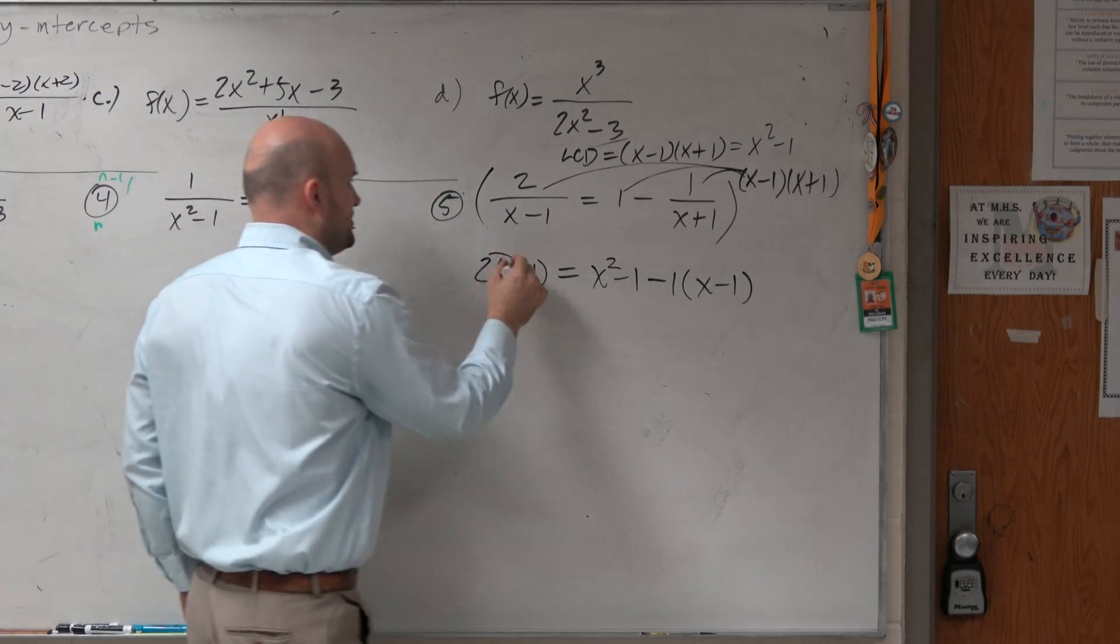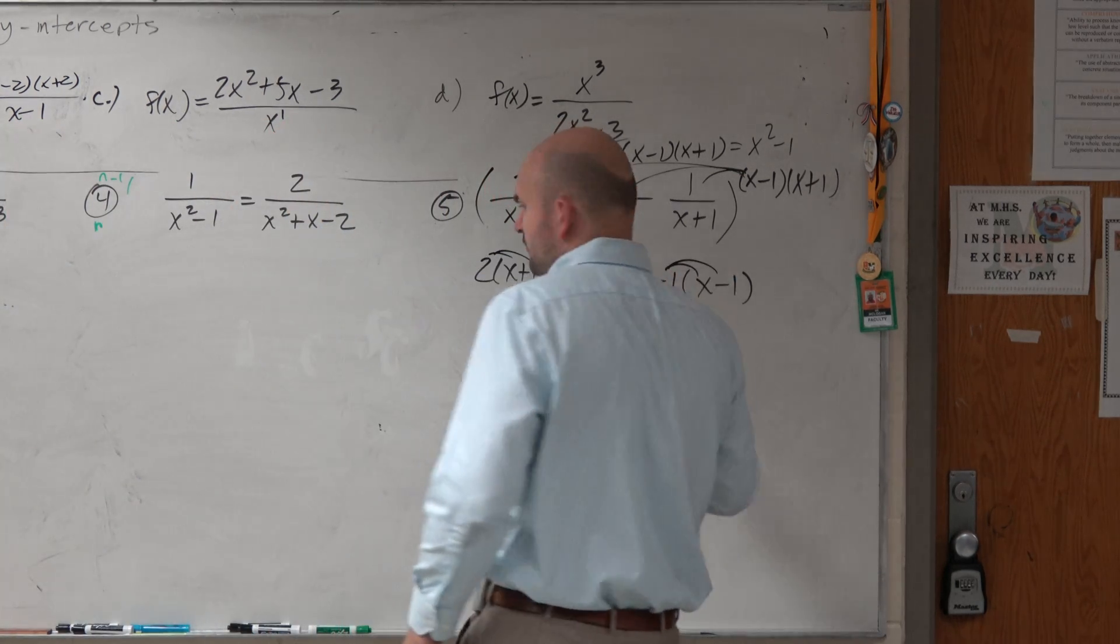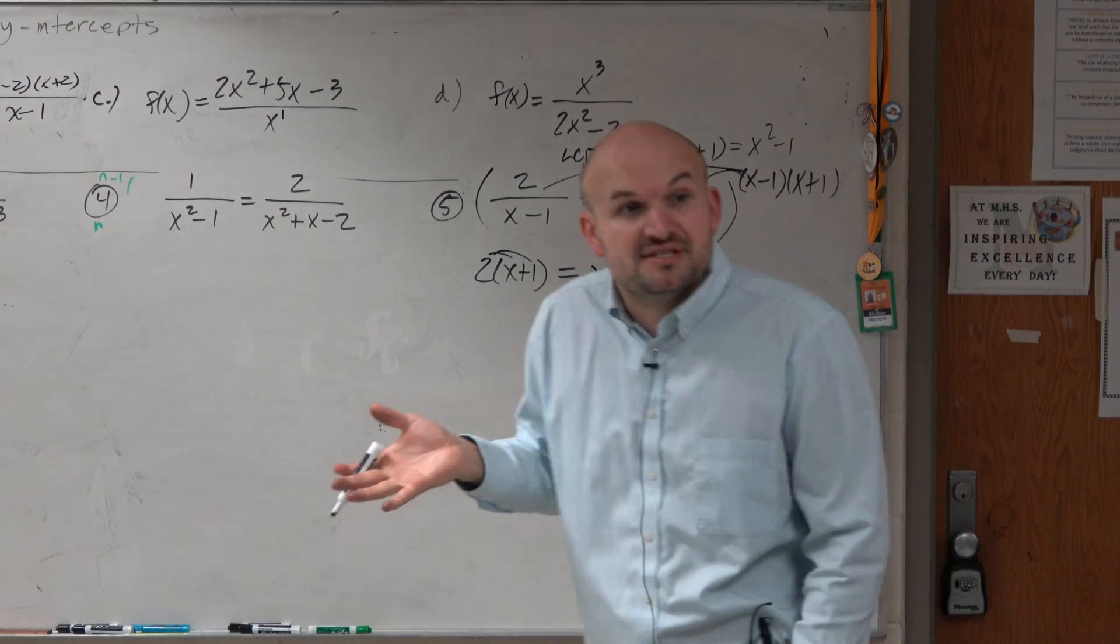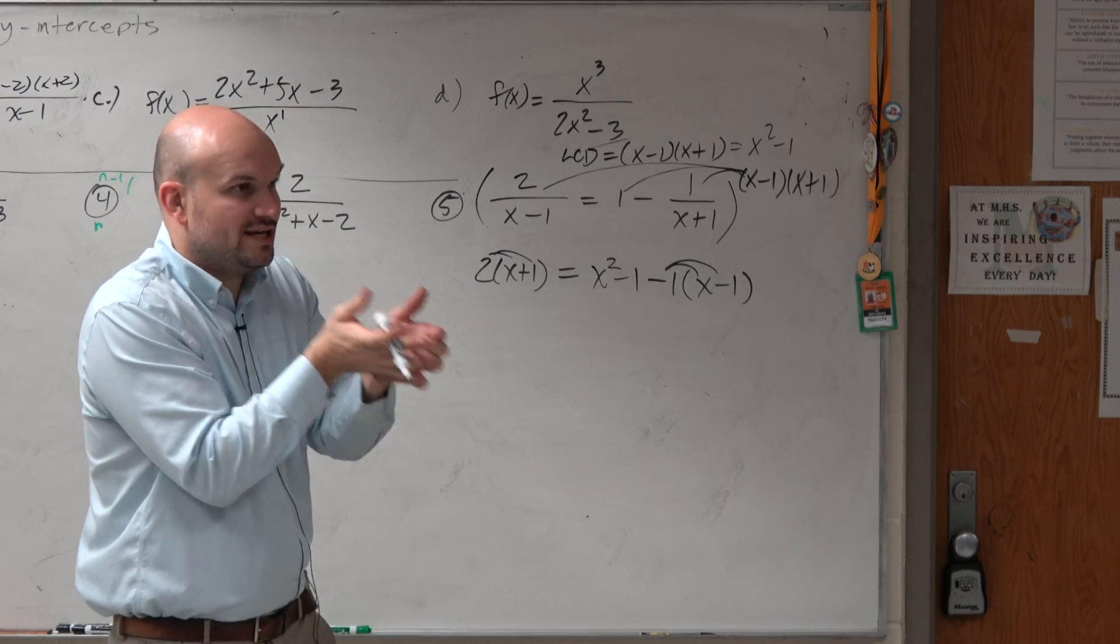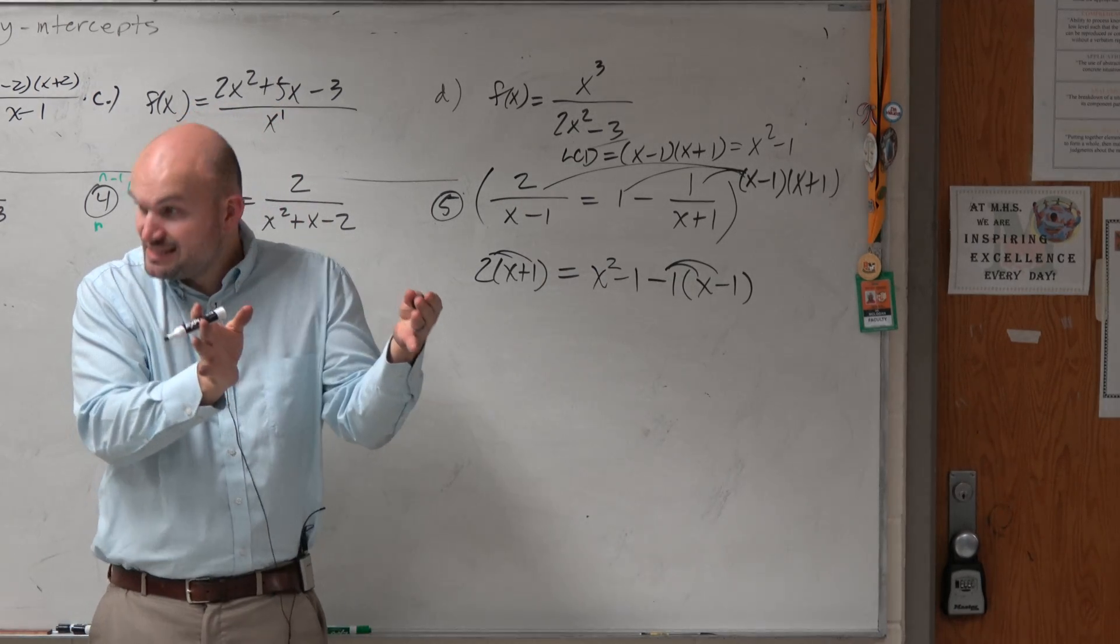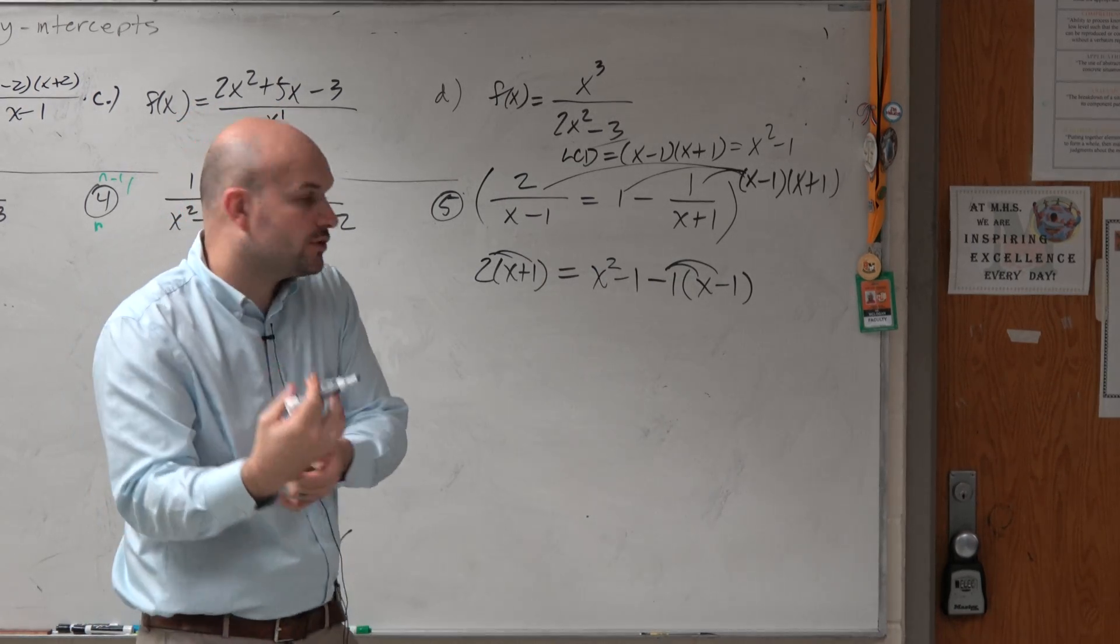Now, I'll just apply a distributed property and get my terms to the same side. Why do I want to get my terms to the same side? Because I have a quadratic equation this time. I don't have a linear equation. I can't just isolate the x. Right? Quadratic equations, we want to set equal to 0, and then either solve by factoring or quadratic formula.